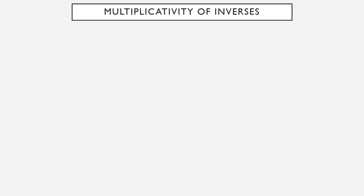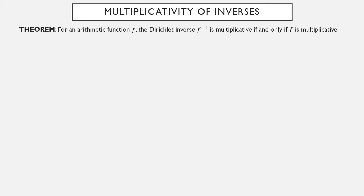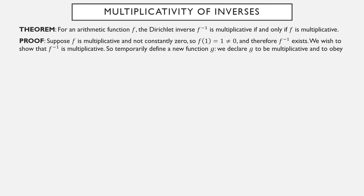Now let's look at how multiplicativity of functions interacts with Dirichlet inverses. The theorem we're going to prove is: for any arithmetic function f, the Dirichlet inverse f inverse is multiplicative if and only if the original function was multiplicative. First, suppose f is multiplicative and not constantly zero. Then f of 1 equals 1, which is a property of any multiplicative function that isn't constantly zero, and 1 is not zero — so f inverse at least exists. What we need to show is that f inverse is multiplicative.